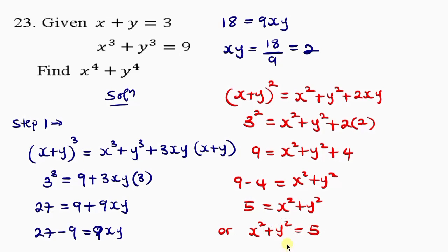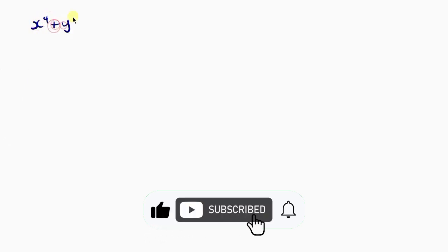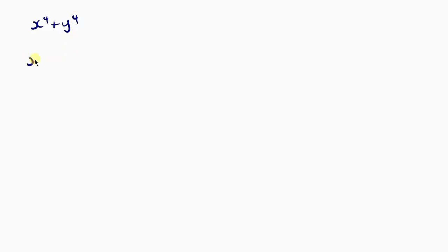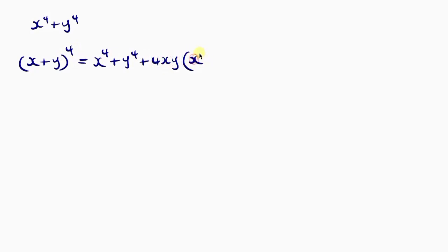I now have xy and x squared plus y squared, which are both needed in the binomial expansion. To get x to the power 4 plus y to the power 4, we expand x plus y to the power 4 using binomial expansion. This equals x to the power 4 plus y to the power 4 plus 4xy(x squared plus y squared) plus 6xy squared.